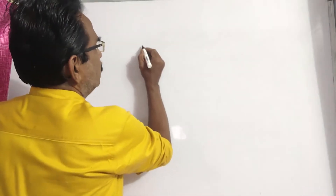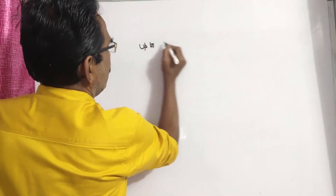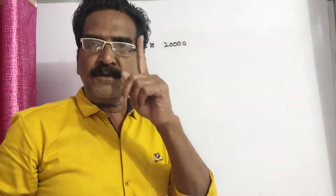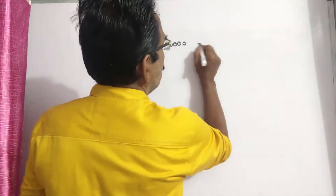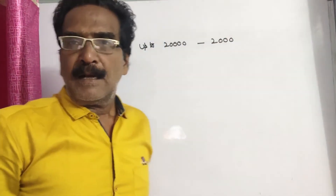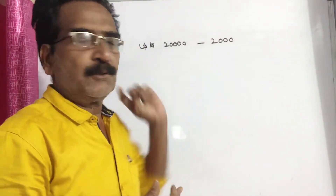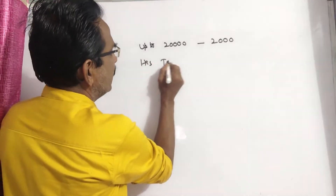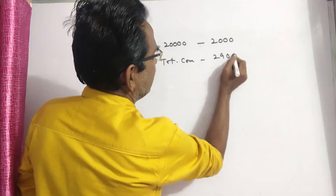See friends, up to 20,000 he gets a commission of 10%. 10% of 20,000 means 2000. So up to 20,000, he gets a commission of 2000. His total commission is 2900.